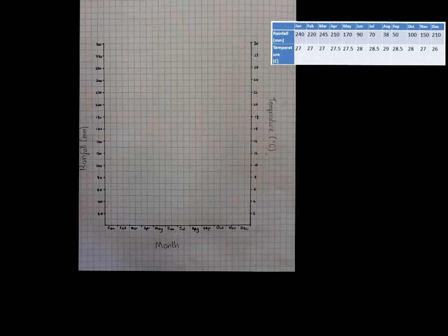It's vitally important that you remember to label your axes, otherwise we're not going to know what they show you. Therefore, I've made sure I've labelled my left-hand y-axis rainfall in millimetres. The right-hand y-axis with temperature in degrees centigrade, and the x-axis with months of the year.